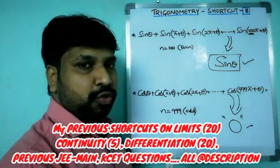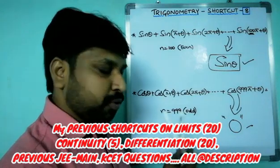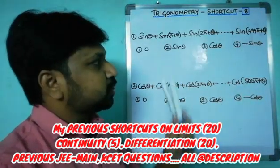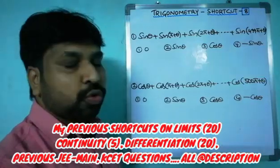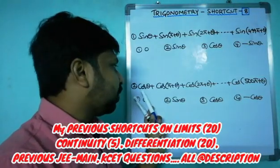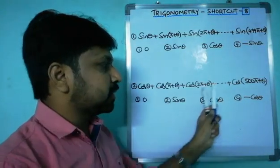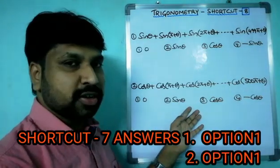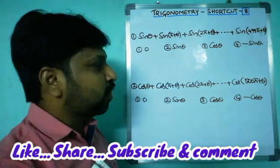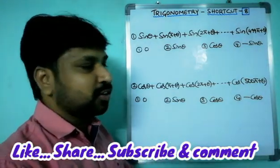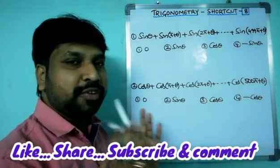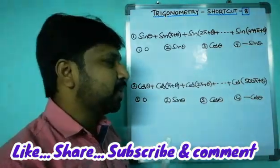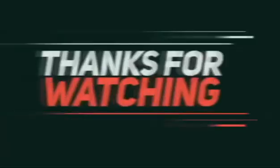Now I want to give a few more questions for you. Question one: sin theta plus sin(pi plus theta) plus sin(2pi plus theta) plus ... plus sin(499pi plus theta). Question two: cos theta plus cos(pi plus theta) plus cos(2pi plus theta) plus ... plus cos(500pi plus theta), followed by options. This is not my turn — that is your turn. Evaluate the sums and give your answer in the comment box. That is all for today's class, thank you very much.